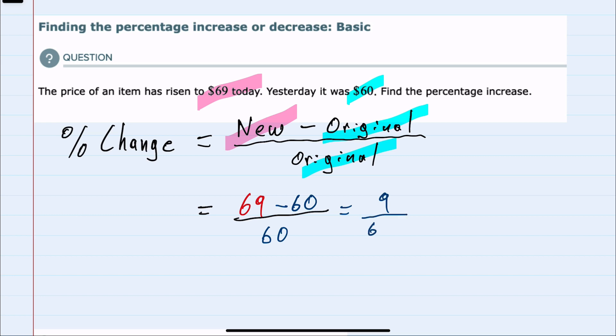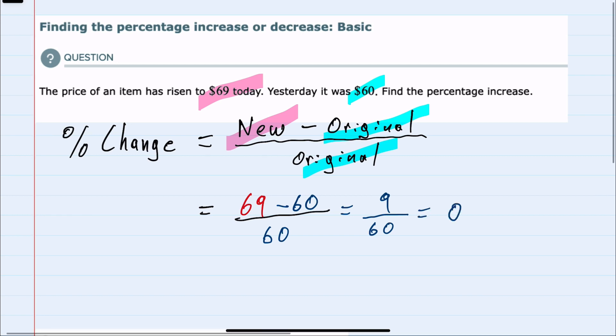And when we compare that to the original price of $60, we have a decimal of 0.15. We need to convert this to a percentage by moving the decimal two places to the right. We have a 15% increase in our new price of $69 versus yesterday's price of $60.